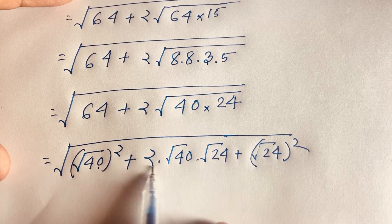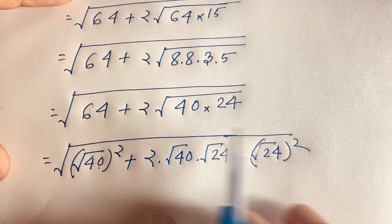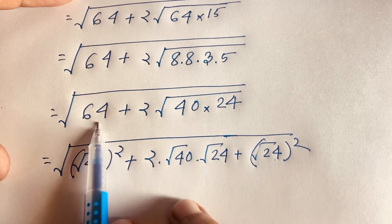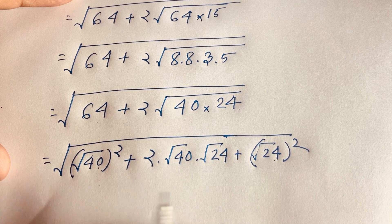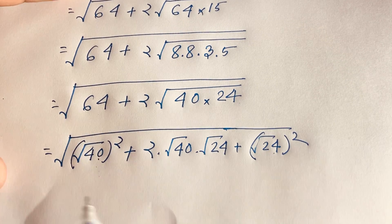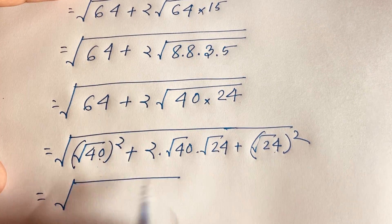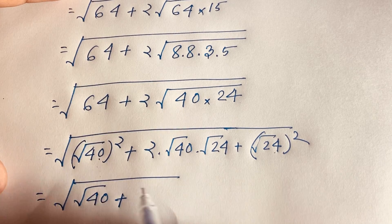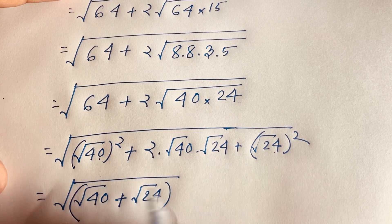The squares cancel, and 40 plus 24 equals 64. So I can apply the formula a² + 2ab + b² and write it as square root of (square root 40 plus square root 24) squared, which gives square root 40 plus square root 24.